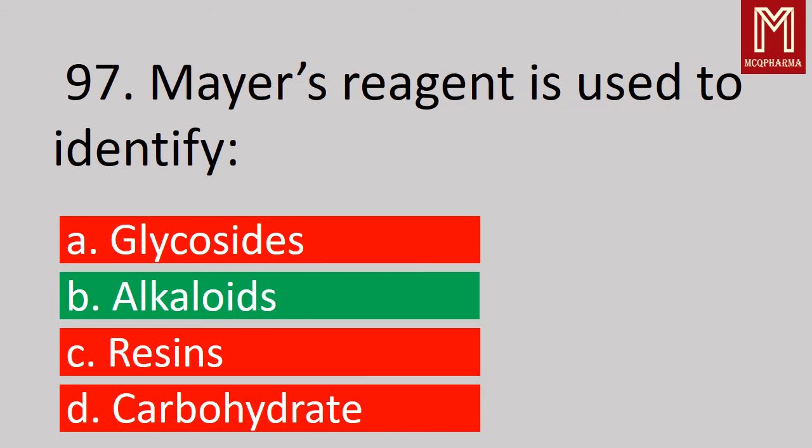Next, Mayer's reagent is used to identify — correct answer, Option B: Alkaloids.